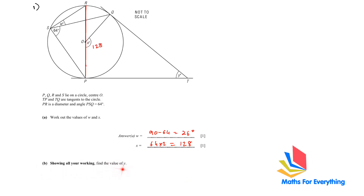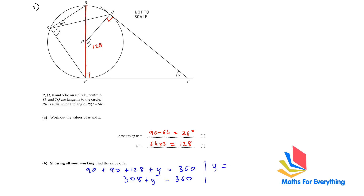Part B: showing all your working, find the value of Y. The angle between the radius and the tangent is 90 degrees, so this angle is 90 degrees and this is 90 degrees. We already have angle X. To find Y, we add up all these angles and make it equal to 360, because it's a quadrilateral with four sides and the sum of all four angles equals 360 degrees. Therefore, 90 plus 90 plus 128 plus Y equals 360, giving 308 plus Y equals 360, so Y equals 52.